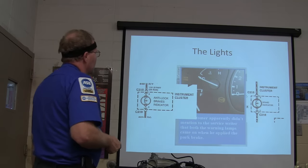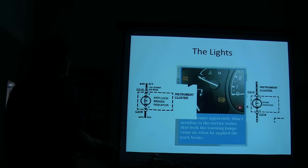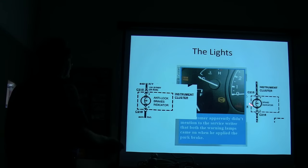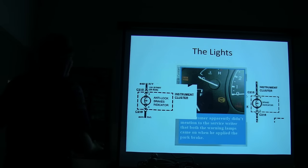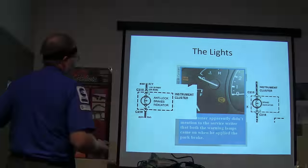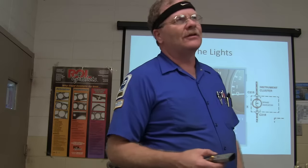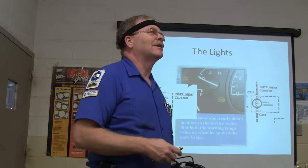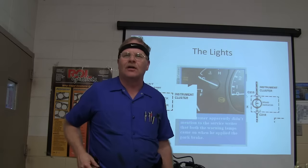This one here had these lights on, that red brake light and that ABS light. This is where they look on the schematic. The customer didn't mention to the service writer that both the warning lamps came on when he applied the park brake. They said, well, he just happened to miss that. Either that or the service writer, it was kind of funny, because this was published in Motor Age in June of 2000. The service writer came out there to me, and he goes, when I read this thing, you made this sound like it was all my fault.